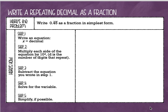So here's the problem. We are going to write 0.45 repeating as a fraction in simplest form. The steps are listed on the side, and it's going to seem a little bit strange when we start doing it, but I promise you it's going to be very easy. The first thing is we're going to write an equation, and we're going to make our equation x equals whatever that decimal is. So we're going to start out by writing x equals 0.45 repeating.